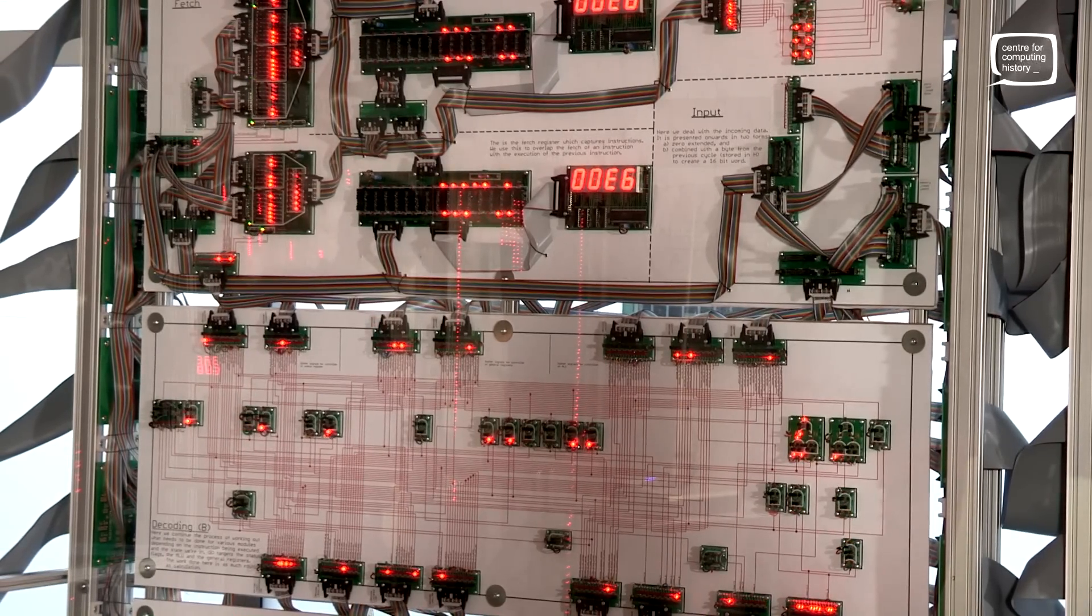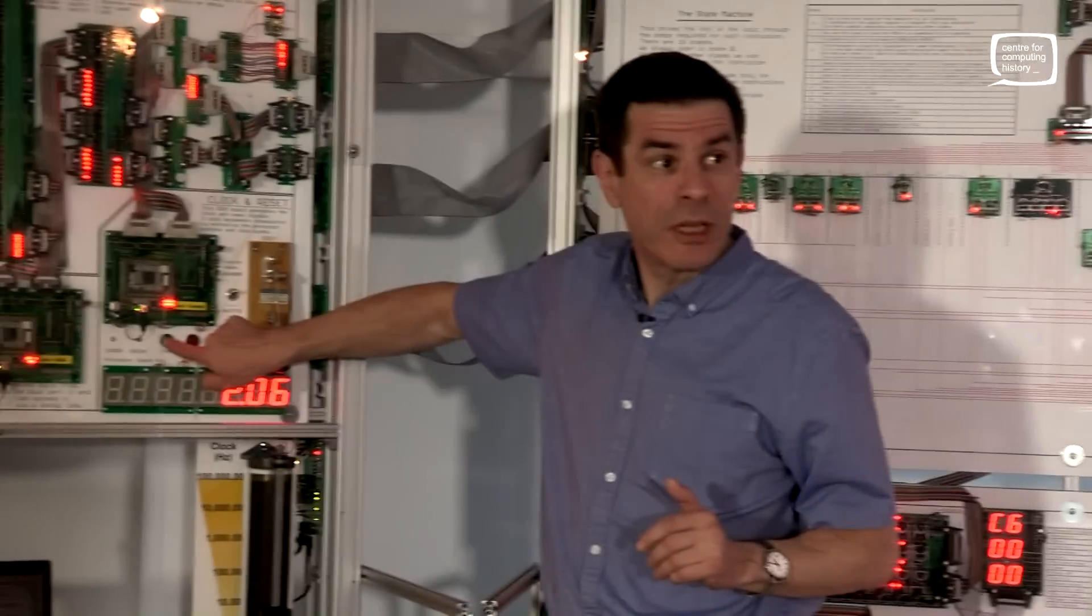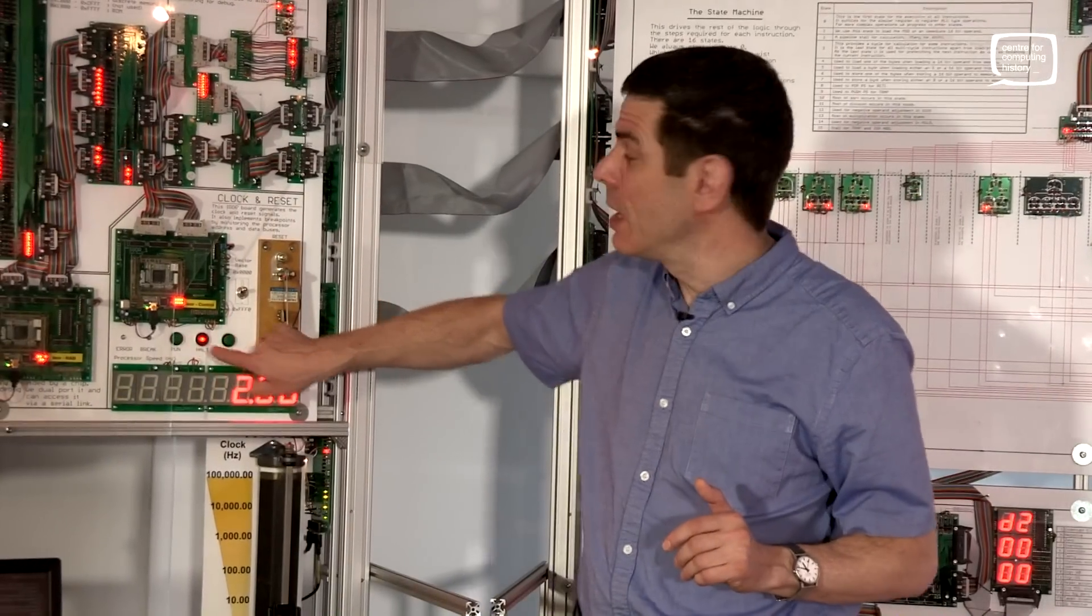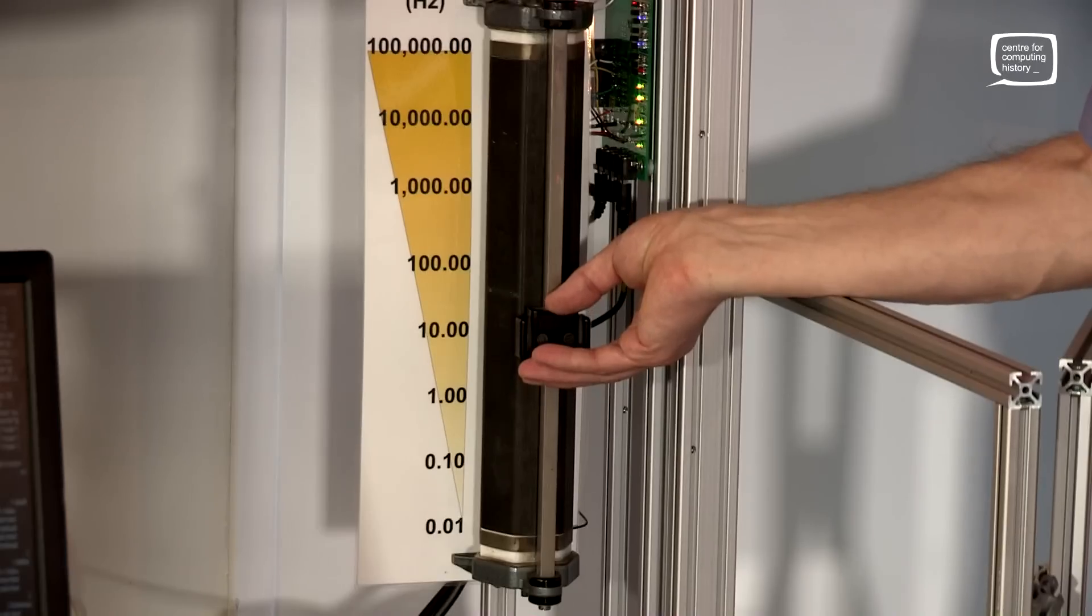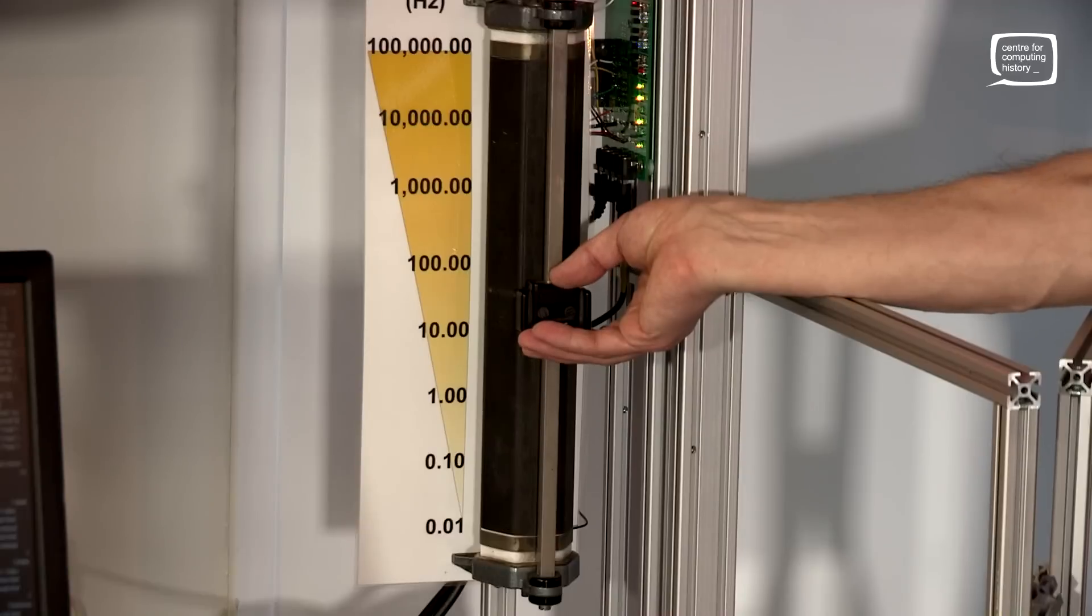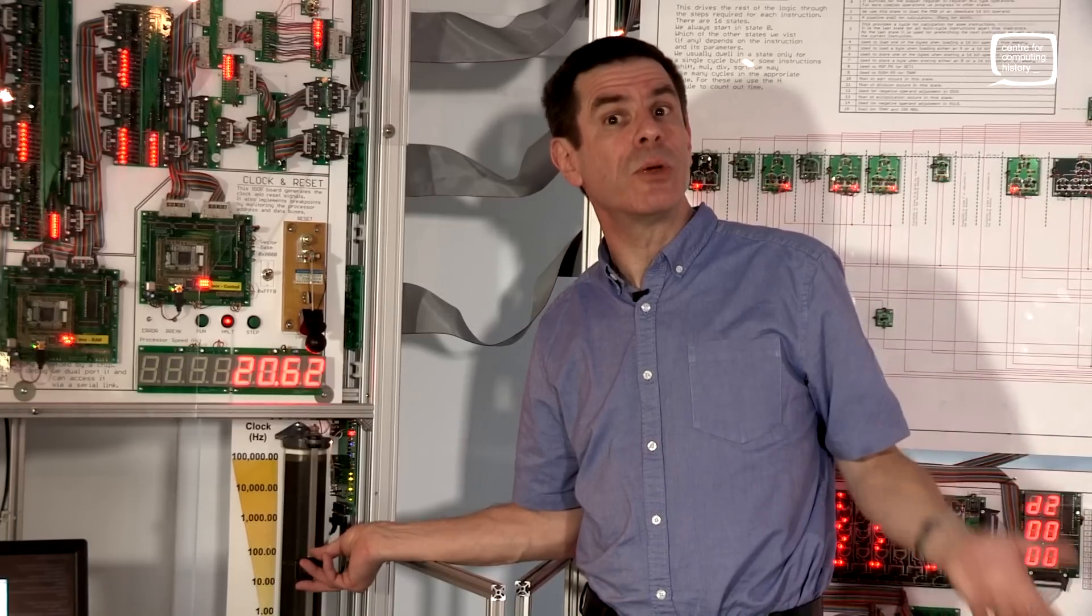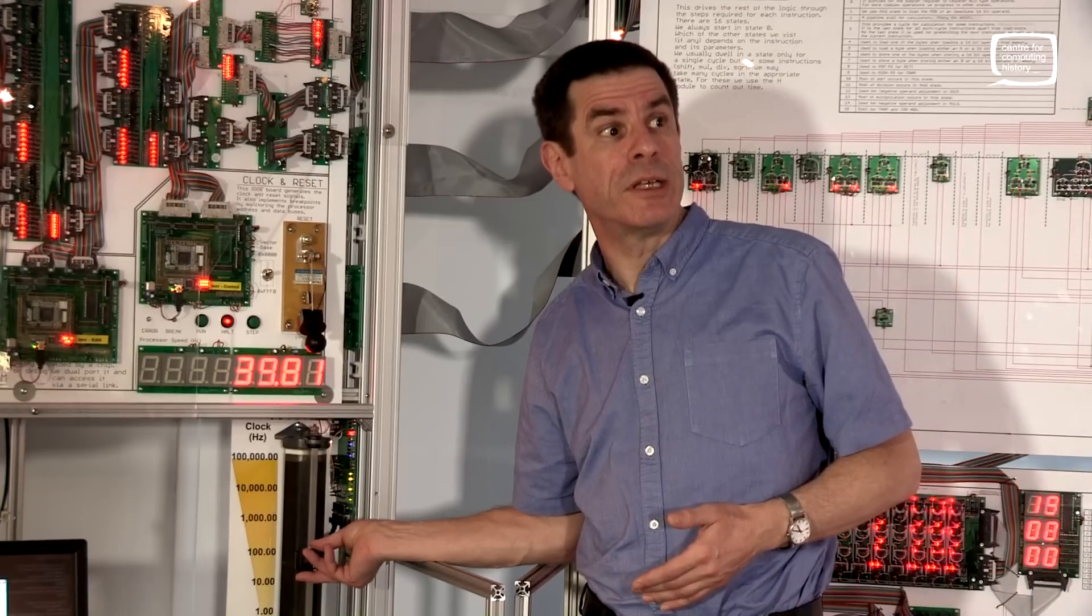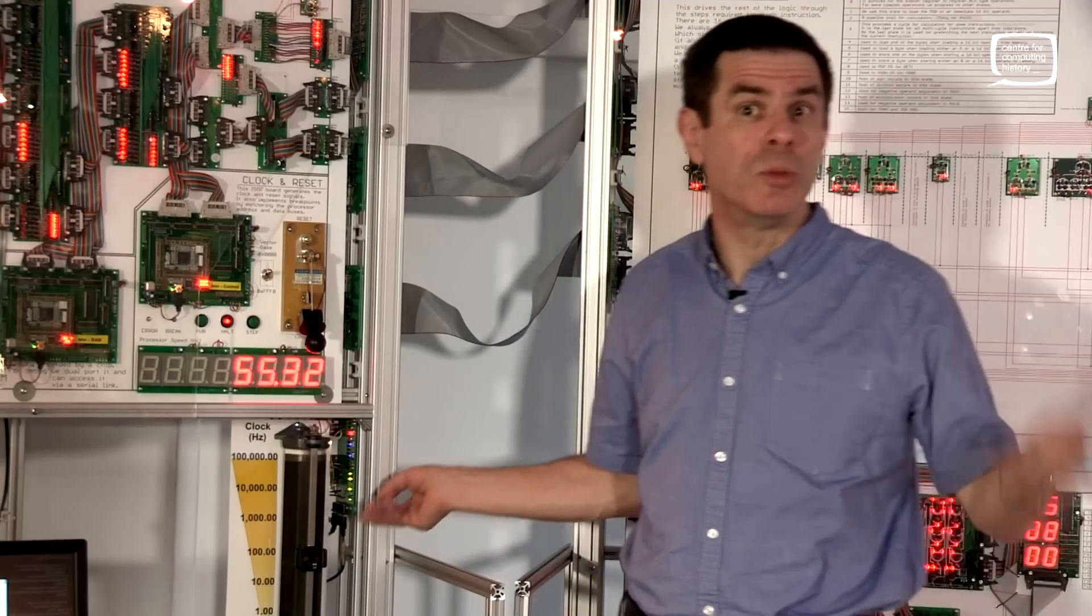And then when we think we've examined it enough, we can get it running again. And then we can speed it up to actually do something sensible. So we run it slowly so we can examine it in detail, and we run it at speed to actually get it to do something useful.